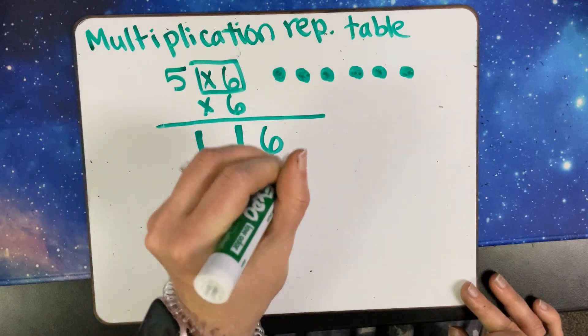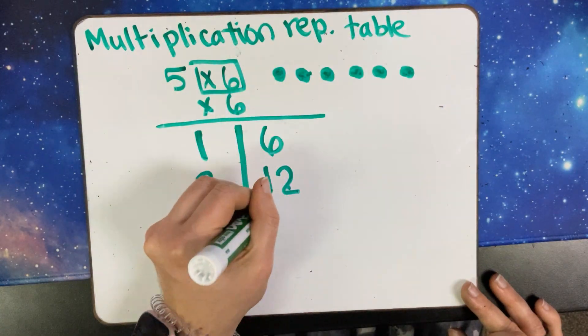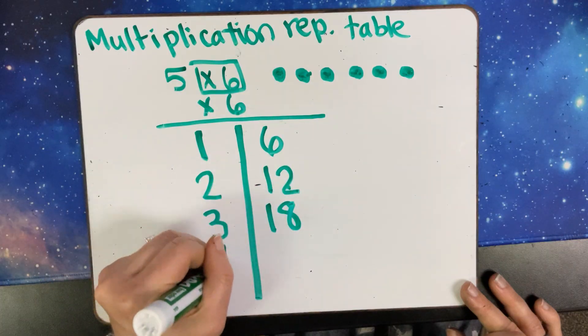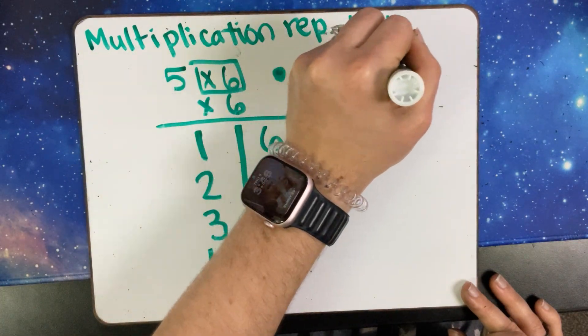Then I'd start my third group. I'd start at twelve, thirteen, fourteen, fifteen, sixteen, seventeen, eighteen. Then I'd go to four, nineteen, twenty, twenty-one, twenty-two, twenty-three, twenty-four.